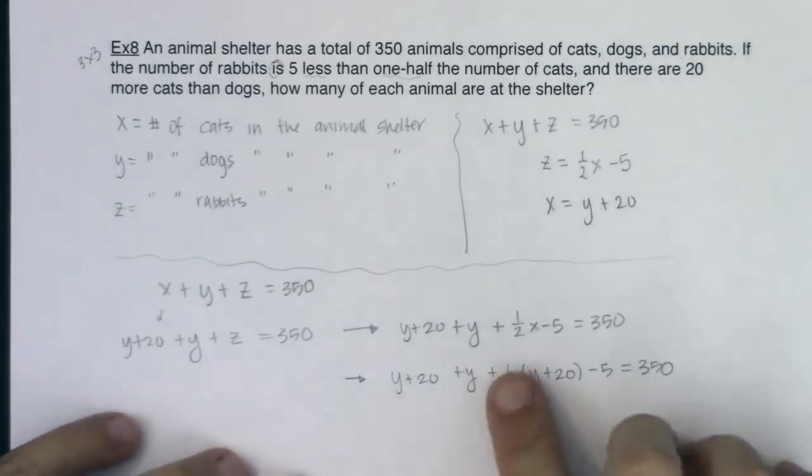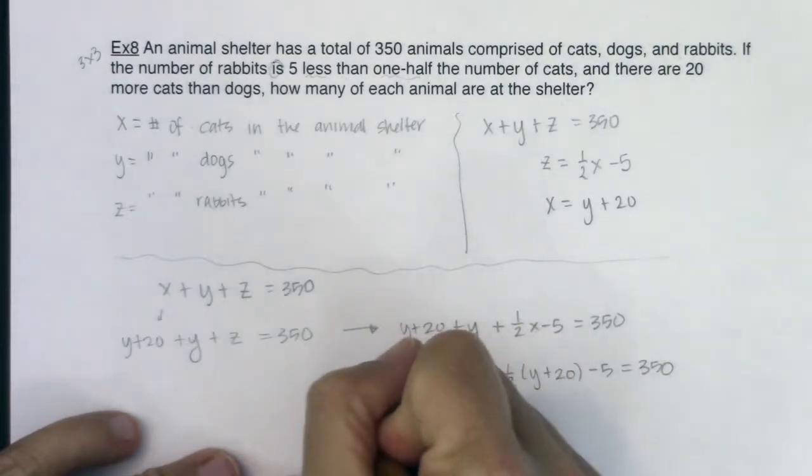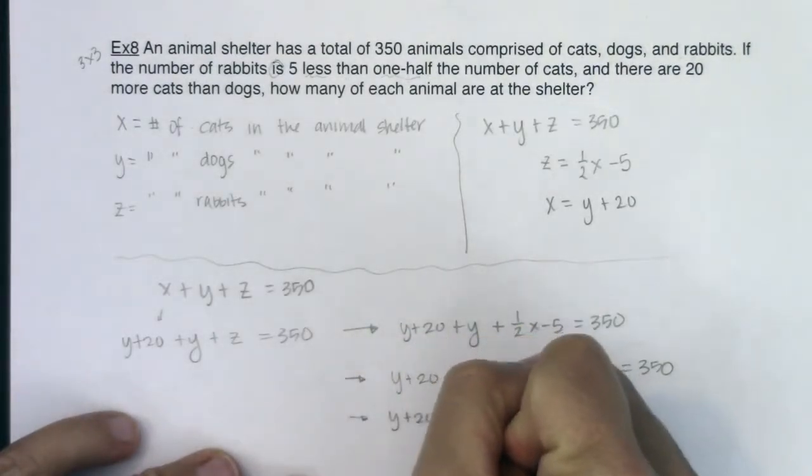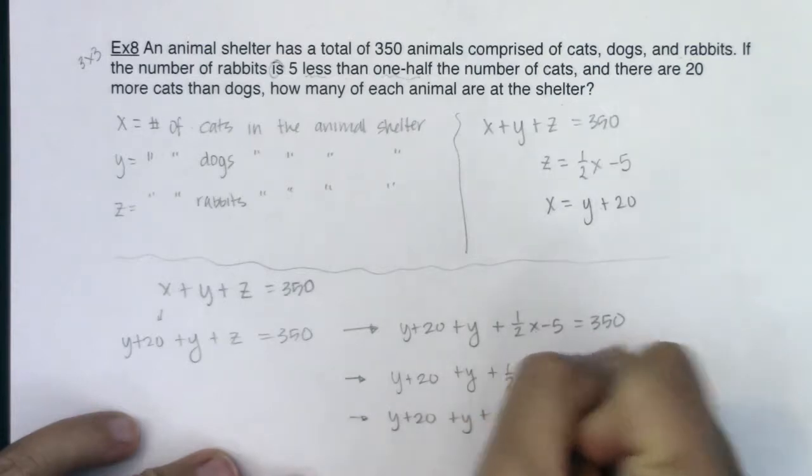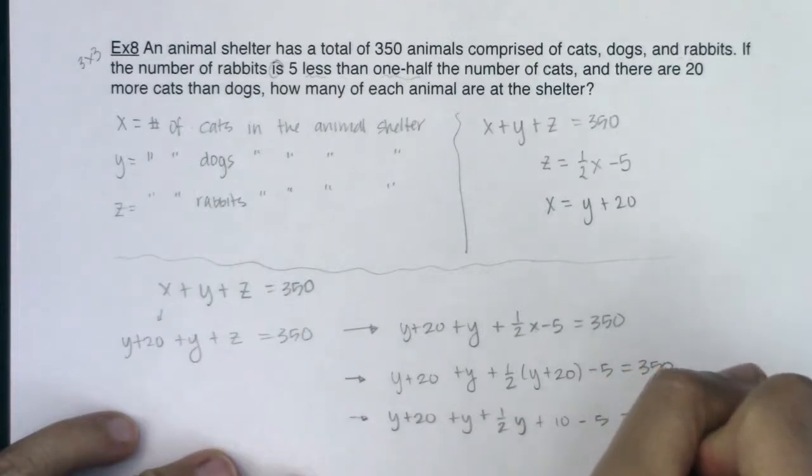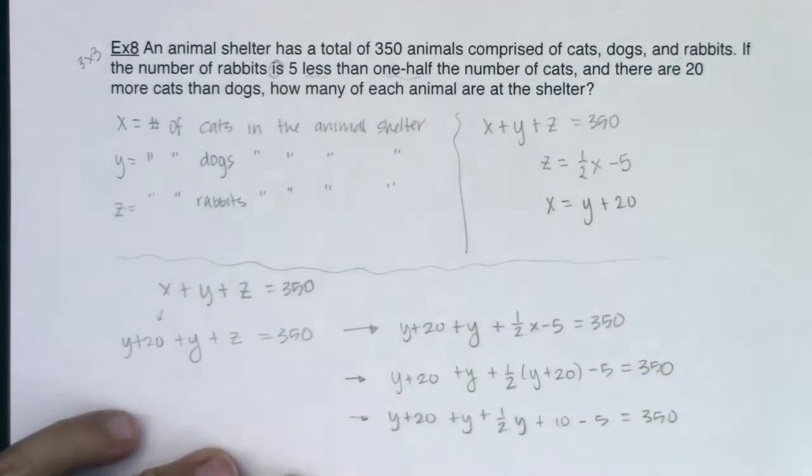Let's start to distribute first and see what we get. I'm looking at y plus 20 plus y plus one-half y. When I distribute the one-half to the 20, I'm looking at 10 minus 5 equals 350.